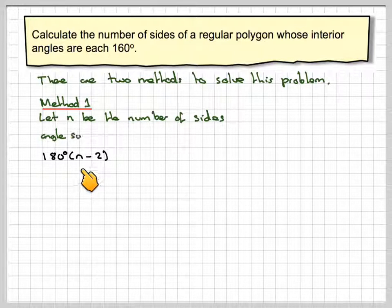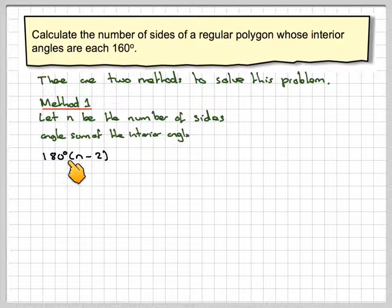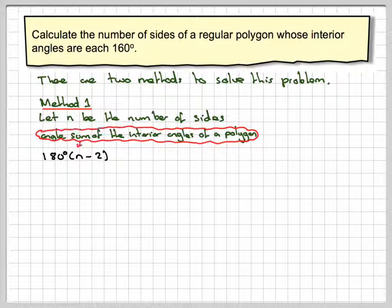We know for any polygon, if we do n minus 2 times 180, that gives me the angle sum of the interior angles of a polygon. If I divide that by n, that gives me the size of one of them, which in this case is 160 because each interior angle is 160.